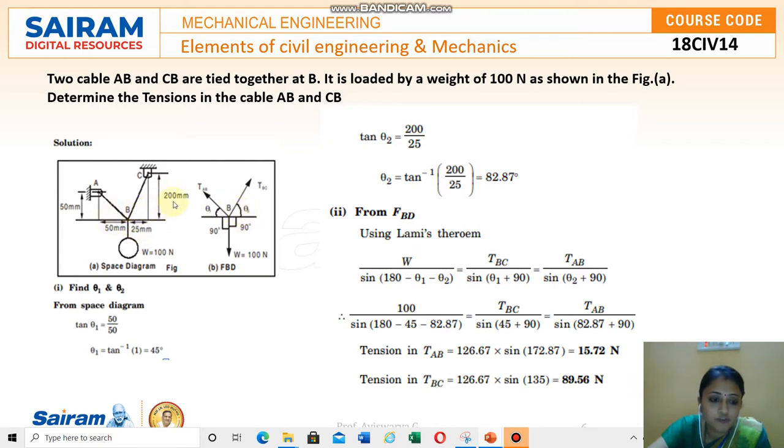They have given the dimensions of 200 mm and 25 mm. You can make opposite by adjacent, so you can use tan theta. Tan theta equal to 200 mm by 25 mm. You will get the answer for this theta. And this theta also parallely, 50 mm, 50 mm, we can get the values. First, we have to find this theta 1 and theta 2.